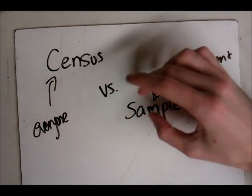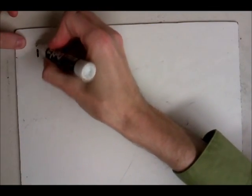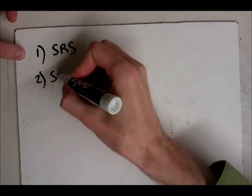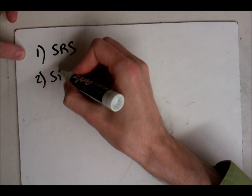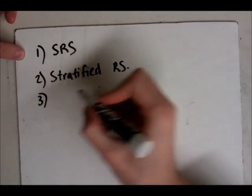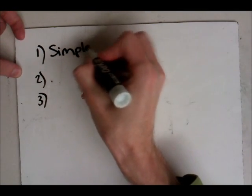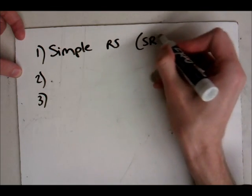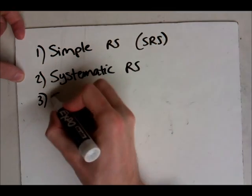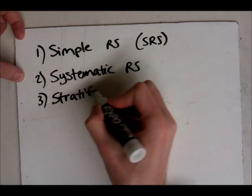Your next question might be, well, how do you decide who goes into your sample? There's five different ways that we talked about in class for making up a sample. Number one, you've got SRS, that's a simple random sample. Number two, you've got systematic random sample, and stratified random sample.